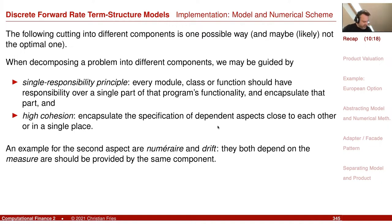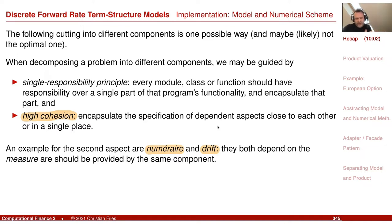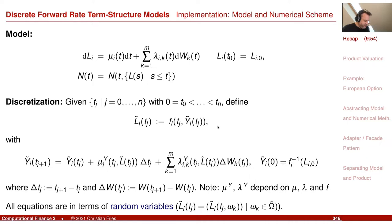A nice example for the cohesion aspect is the numeraire and drift. If you define the numeraire — spot measure numeraire, terminal measure numeraire — that defines the drift. So the two should be in the same place. We provided this as a process model, the model for the stochastic process. That was our mathematical setup.